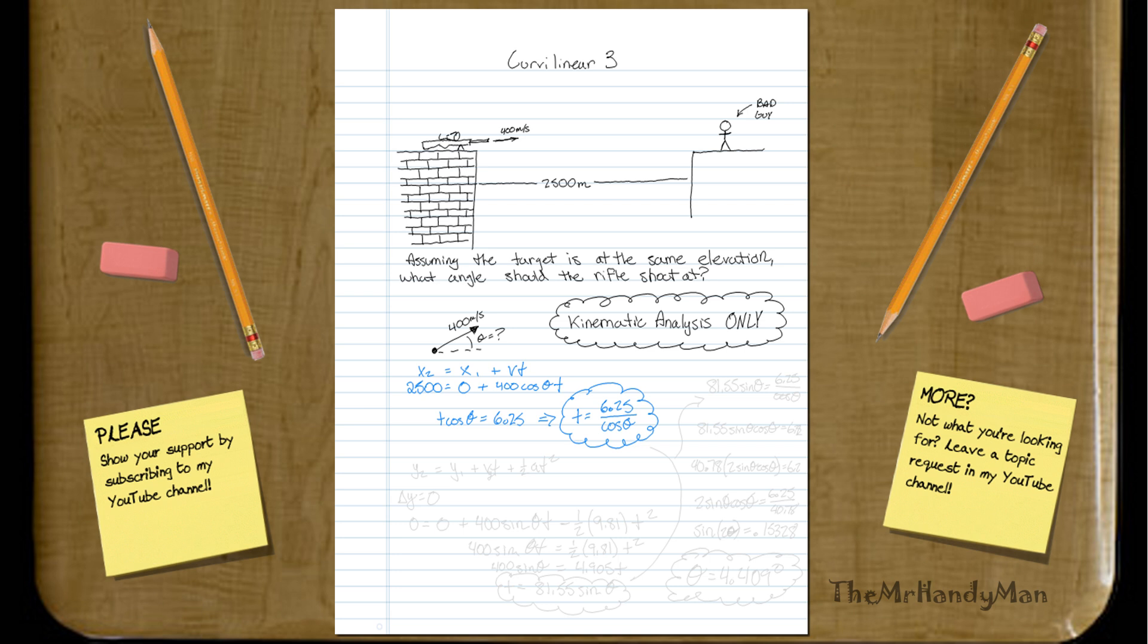So now we go into the vertical analysis, which is going to be y2 equals y1 plus vt in the y direction, plus 1 half at squared.